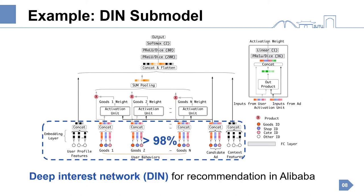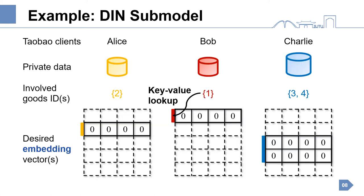We use Deep Interest Network, or DIN for short, as an example. DIN is deployed in Alibaba for recommendation and comprises embedding, attention, and fully connected layers. The embedding layer occupies more than 98% of the full model. The DIN submodel of a Taobao client contains the embedding vectors of its involved goods IDs and the other network layers. For example, if Bob's private data involves only goods 1, then he needs only the embedding vector of goods 1, while the other embedding vectors are redundant.